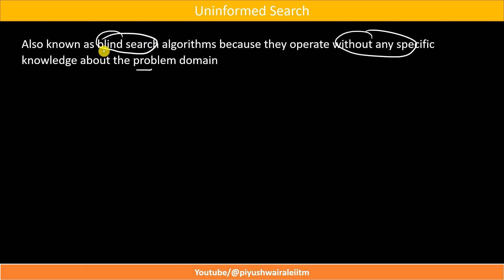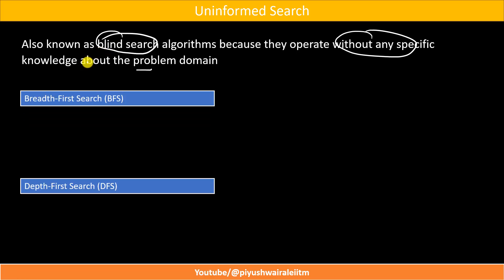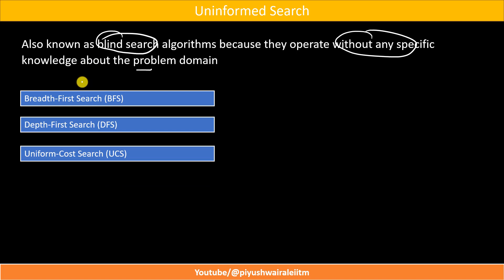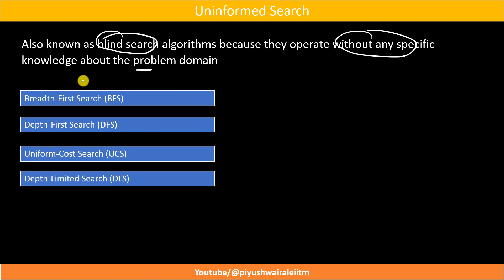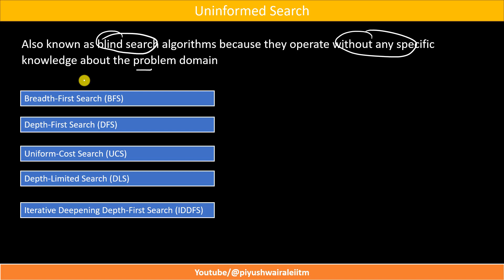There are different techniques used in uninformed search. The first one is Breadth First Search, then we have Depth First Search, then Uniform Cost Search, then Depth Limited Search, and then Iterative Deepening Depth First Search. In this lecture, we are going to focus on Depth First Search, and then we will explore other techniques one by one.